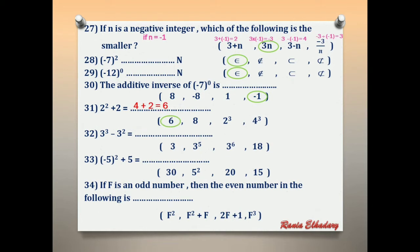Number 32: 3 power 3 minus 3 power 2. Calculate each: 3 power 3 = 27 and 3 power 2 = 9. 27 minus 9 equals 18.